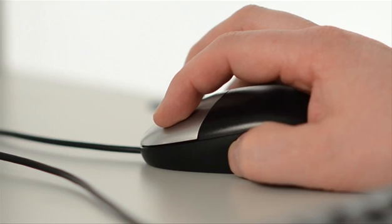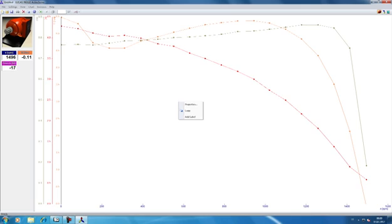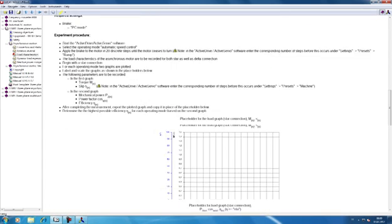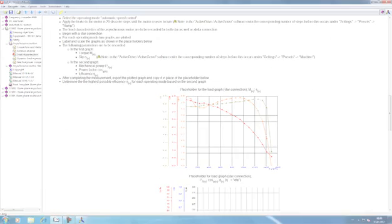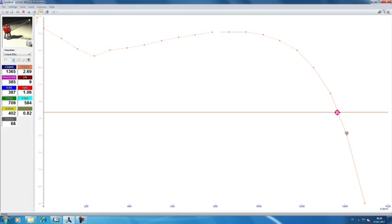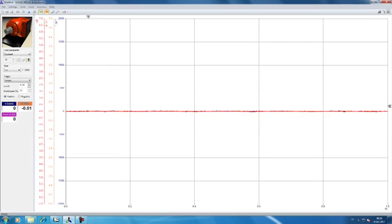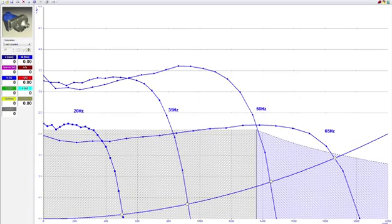Afterwards, the measurement results are evaluated and documented with the training software. The servo machine test stand permits a variety of measurements and investigations into the operating point, the system's dynamic response, and the frequency converter.